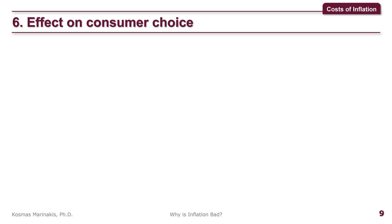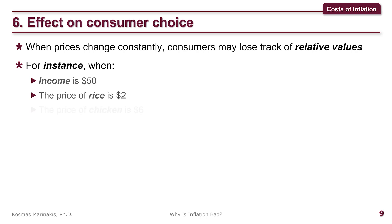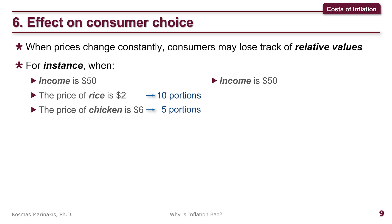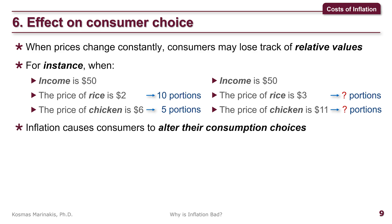A sixth problem of inflation is that it affects consumer choices. When prices change constantly, consumers may lose track of relative values. For instance, when income is $50, the price of rice $2, and the price of chicken $6, a consumer will go through the normal utility optimization process and may decide to purchase 10 portions of rice and 5 portions of chicken. If, however, inflation changes the price ratio — while income remains $50, the price of rice increases to $3 and chicken rises to $11 — the consumer will have to change the ratio of rice and chicken they buy. Therefore, inflation causes consumers to alter their consumption choices.